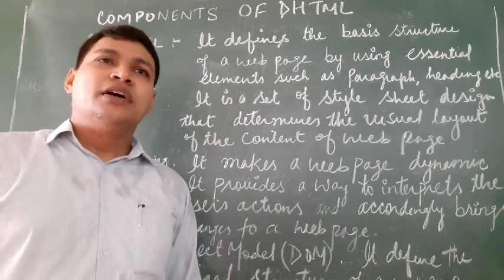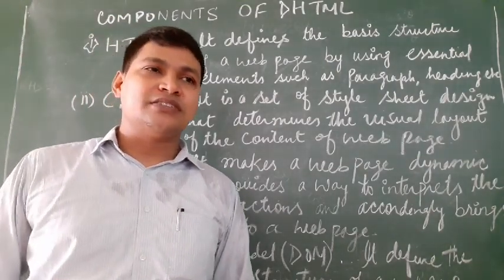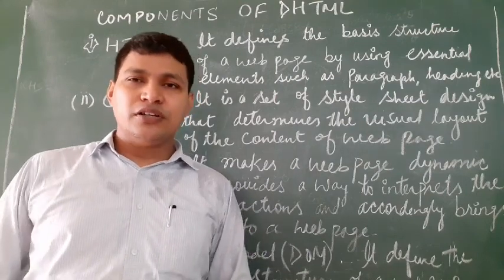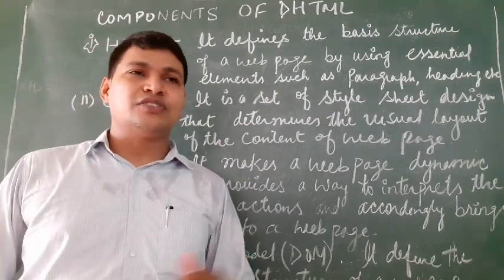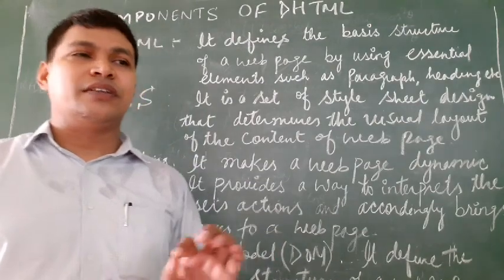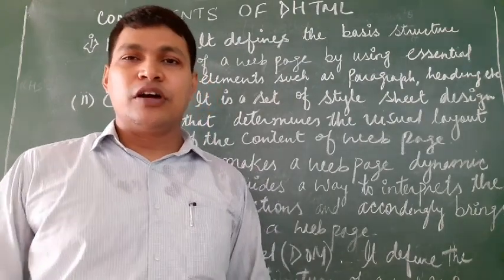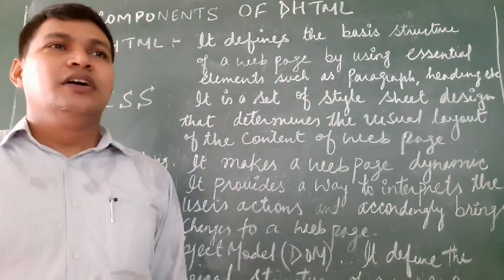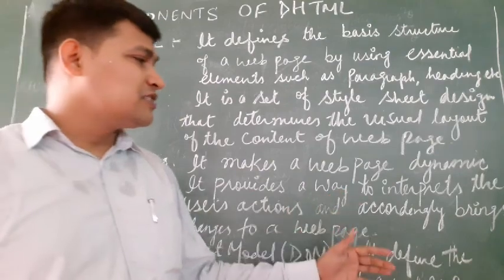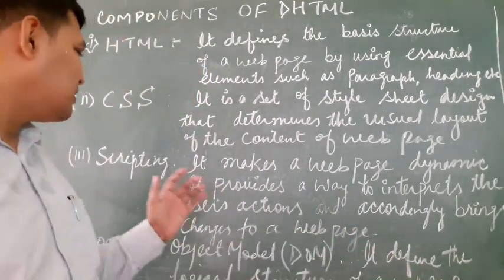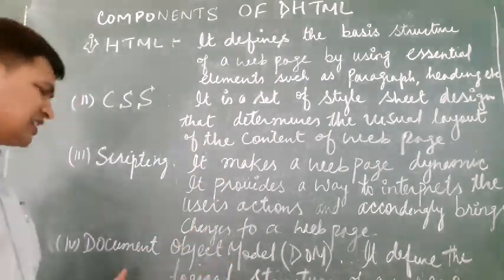Let me give an example. Whenever you visit a shopping website and you search according to your given condition, it will change. For example, if you are searching for a mobile phone, first you search for Nokia company phones. After some time, you want to see Samsung company phones. You will give the modification in the search box, and according to the search box, the information will display on the web page. All this interpretation is done by the scripting language that we use with DHTML.